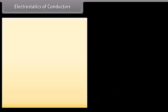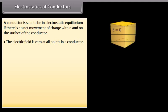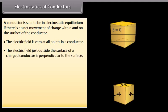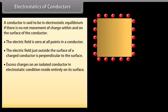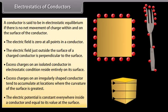Electrostatics of conductors. A conductor is said to be in electrostatic equilibrium if there is no net movement of charge within and on the surface of the conductor. The electric field is zero at all points inside a conductor. The electric field just outside the surface of a charged conductor is perpendicular to the surface. Excess charges on an isolated conductor in electrostatic equilibrium reside entirely on its surface. Excess charges on an irregularly shaped conductor tend to accumulate at locations where the curvature of the surface is greatest. The electric potential is constant everywhere inside a conductor and equal to its value at the surface.